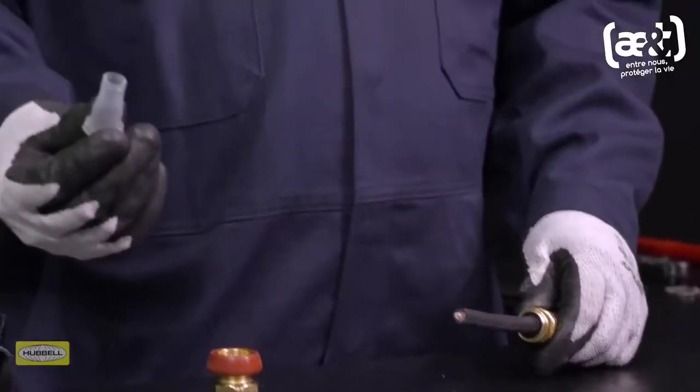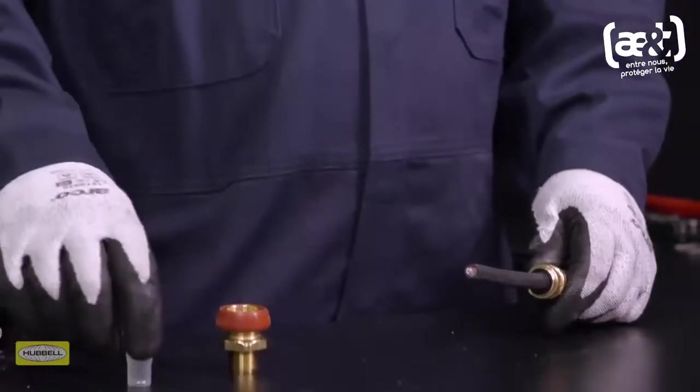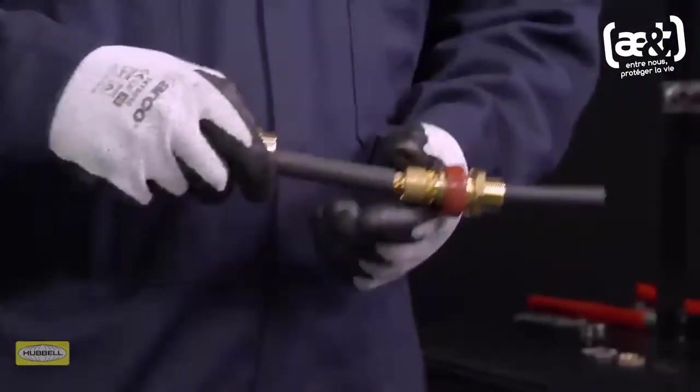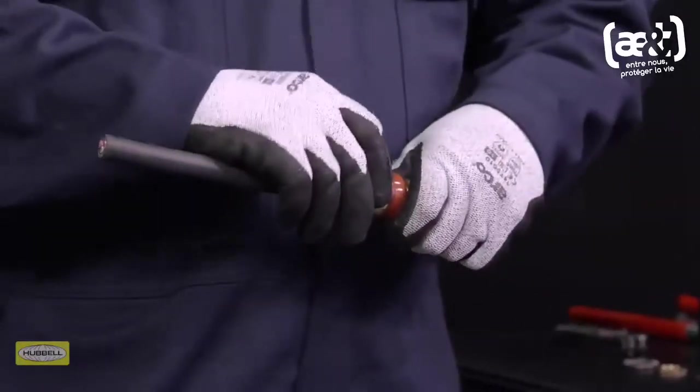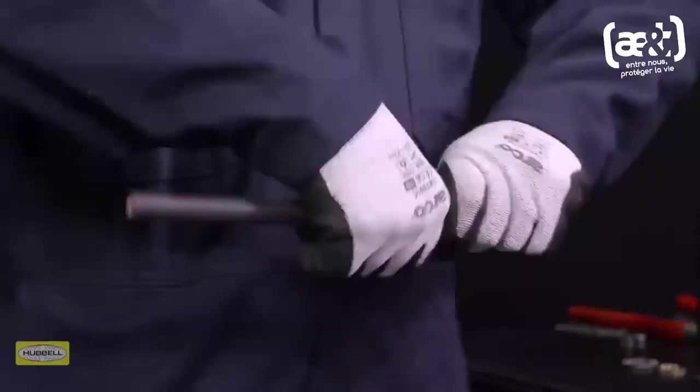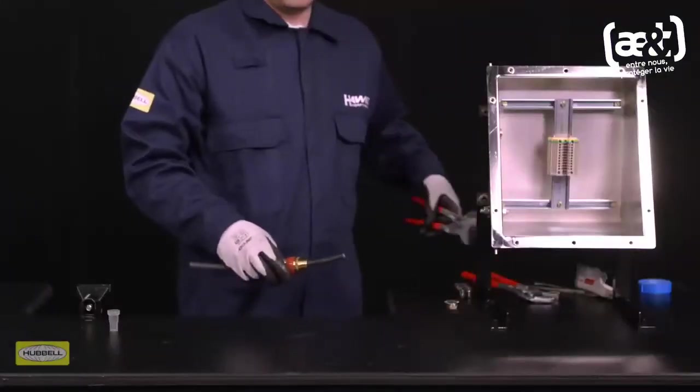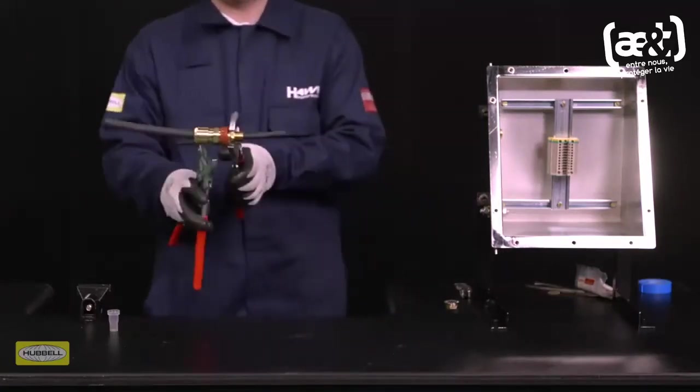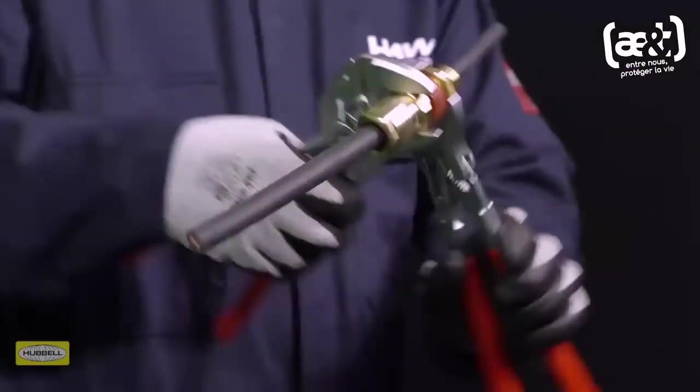Ensure the compound pot is removed from the assembly. Slide the entry over the cable. Slide the middle nut up to the entry and hand tighten. Support the cable to prevent it twisting. Grip the entry with a spanner or wrench, then use a second spanner or wrench to tighten half to three-quarters of a turn.